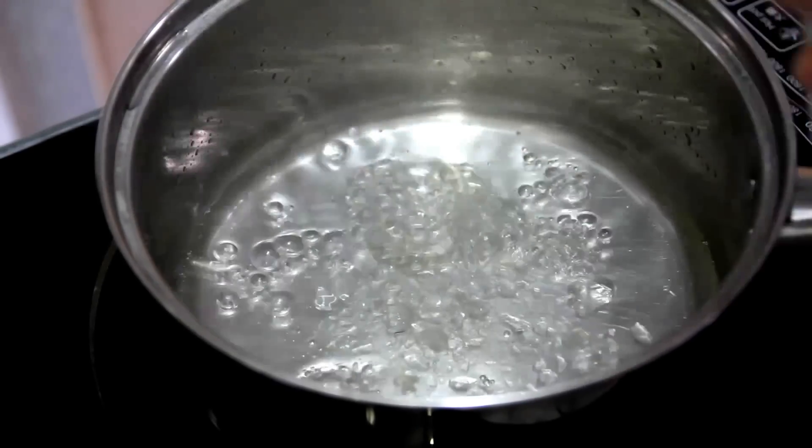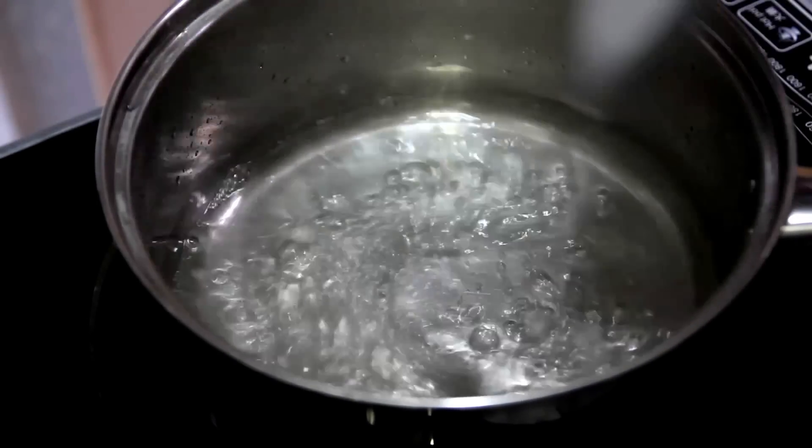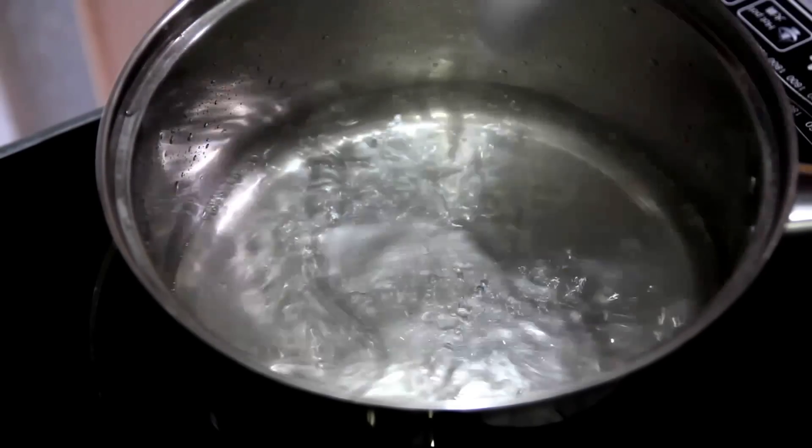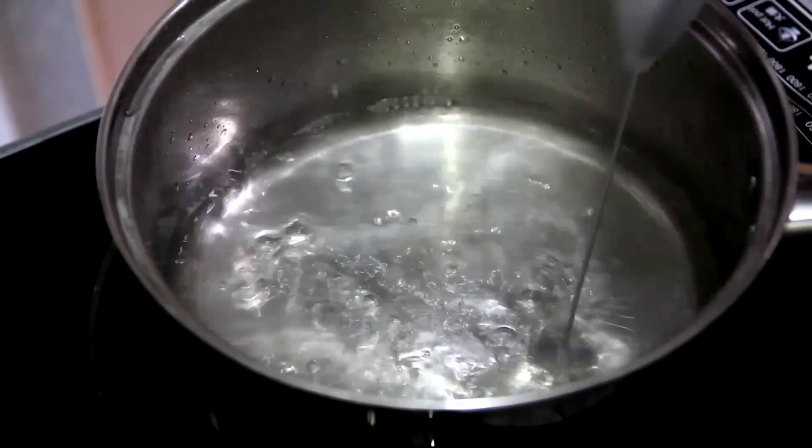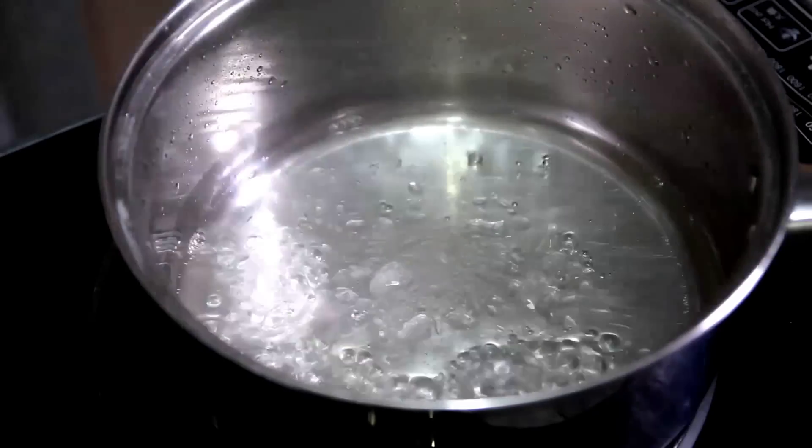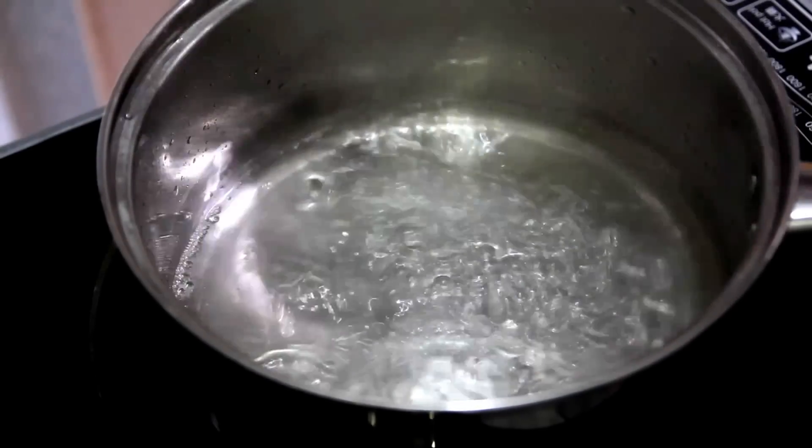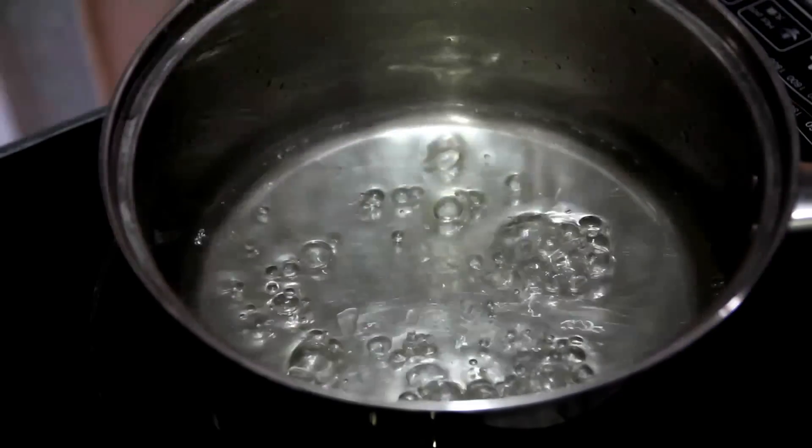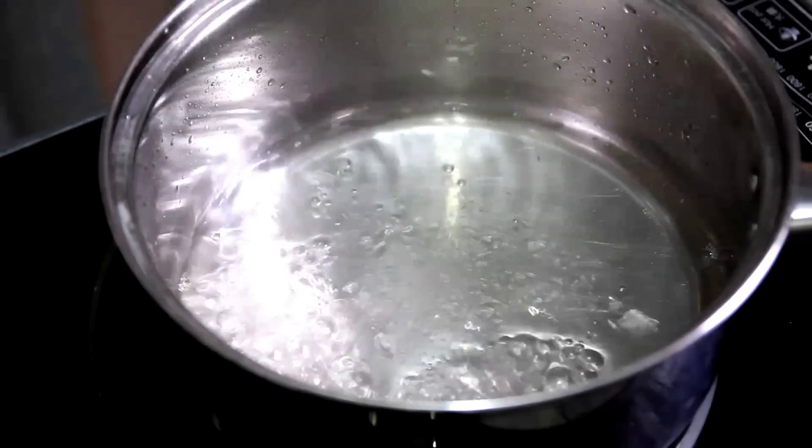Now prepare another saturated alum solution, but this time, boil the water and add alum in the boiling water. Let it dissolve. When all alum is completely dissolved, add alum again until the solution changes to pale yellow or some alum cannot dissolve any more.